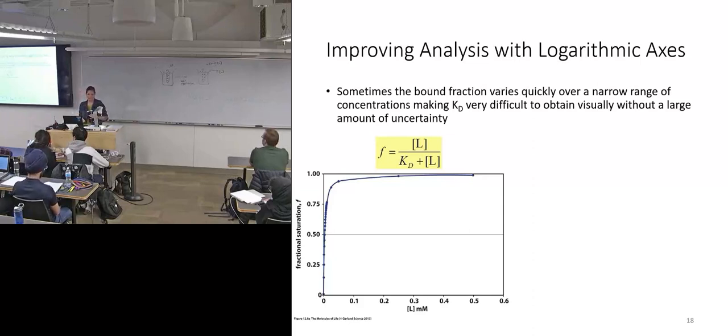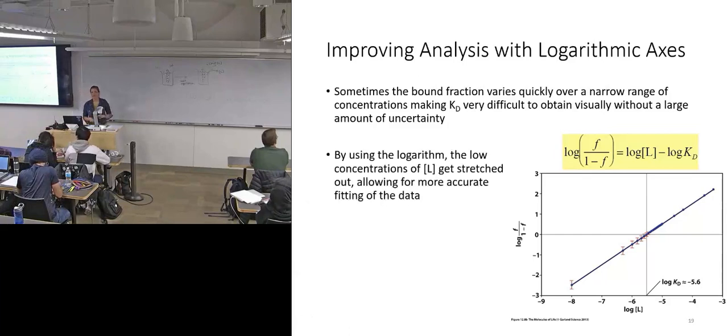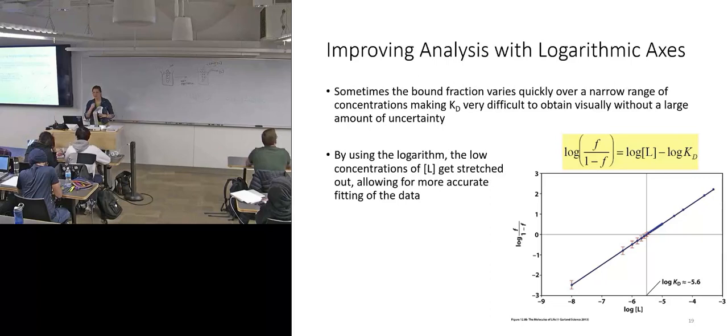And so what you want to do is manipulate your equation and put it in a log-log relationship so that you can more easily get a Kd off of your fraction. By using the logarithm, the low concentrations of ligand get stretched out, allowing for a more accurate fit of your data.